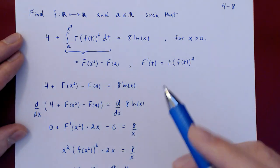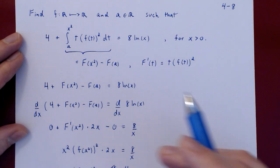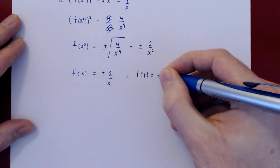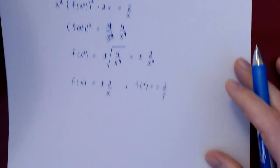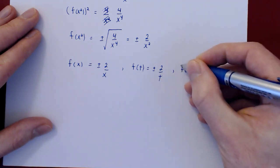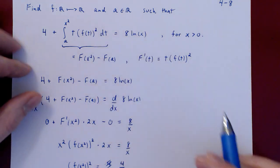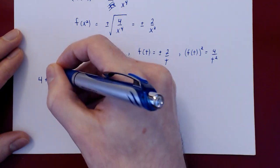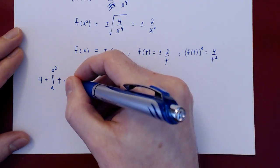Now that we know lowercase f, we can replace it in the original integral, simplify, perform the integration, and we will then be able to solve for a. Replacing f of t by plus or minus 2 over t. Notice that we have the square, and so whether we take the positive or the negative of f, we get the same answer squared — this is simply 4 over t squared. So we get 4 plus the integral from a to x squared of t times the square of f of t, which is 4 over t squared, dt, equal to 8 ln of x.